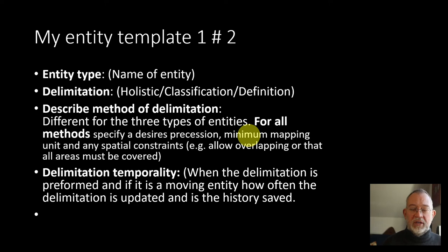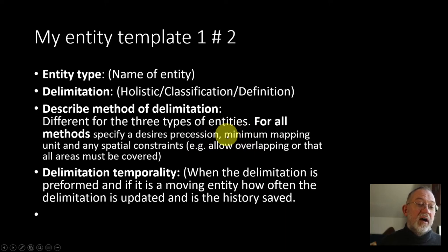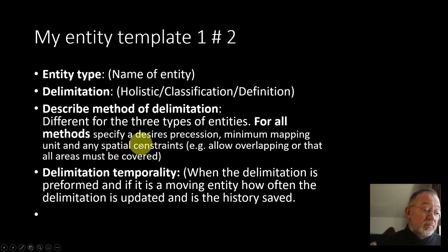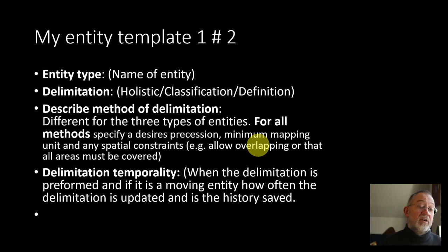Remember, we often call these conceptual models ontologies — meaning what really exists. If something is smaller than the minimum mapping unit, it doesn't exist in our world. There are buildings that are too small to be registered because they fall below the minimum mapping unit. We can also have spatial constraints — for instance, soil types are not allowed to overlap since something is one type or another, but forest fires through time will typically overlap.